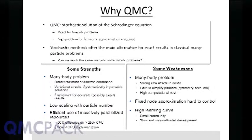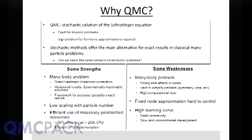So, why QMC? Stochastic methods are the way to solve classical many-body problems. If you have a collection of atoms and you know the potential, there's no question that you can solve this problem — you just run Monte Carlo or molecular dynamics. We cannot do the same for fermions. The whole dream of the field is to develop a method that would be exactly equivalent: solving the sign problem would give us a method for fermion problems analogous to how we solve classical problems.